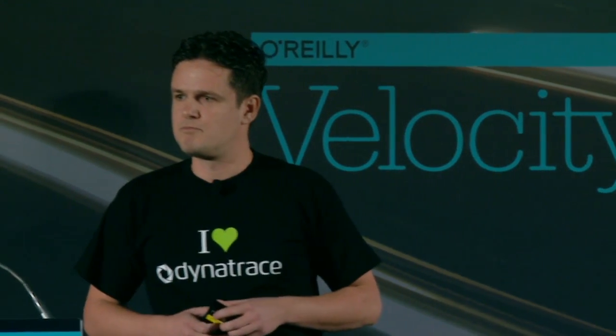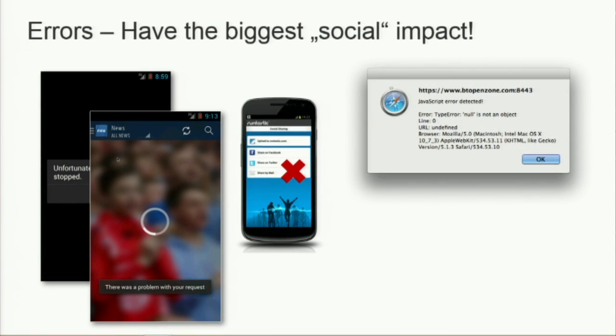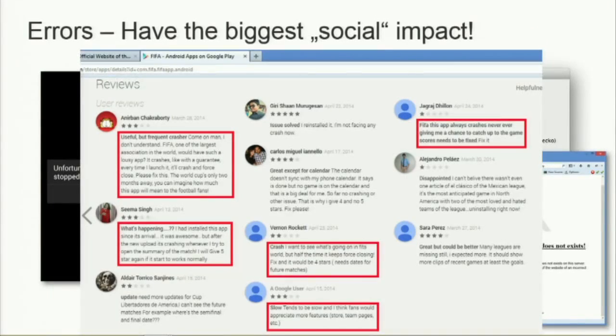Another thing that is annoying is errors. On mobile devices we have crashes. We also have web requests failing — like in the FIFA app right before the FIFA World Cup started. There's the good old known JavaScript error. And we all know the funny 404 pages that no one really likes. The problem is people go out and have social media interactions, publishing there, and you end up with bad ratings in the app stores and no one uses your app anymore.